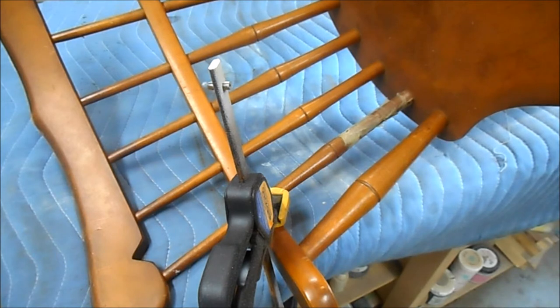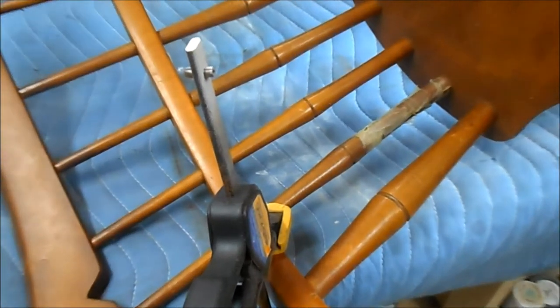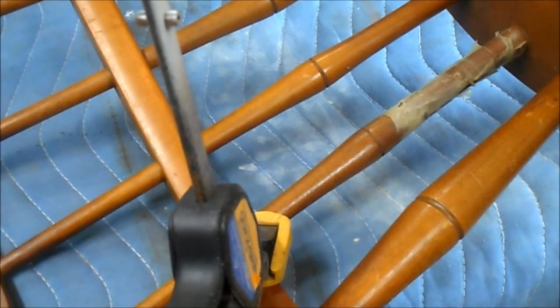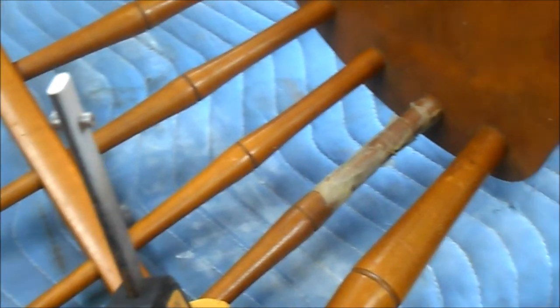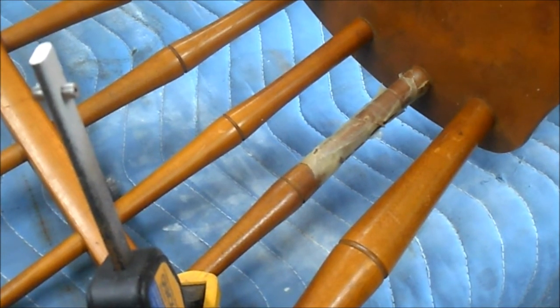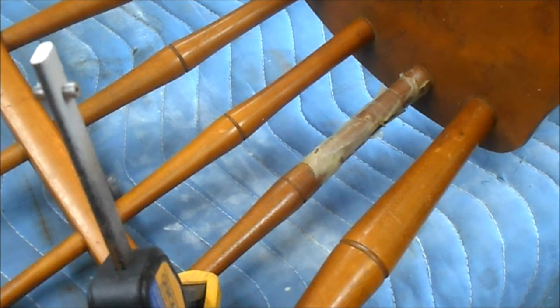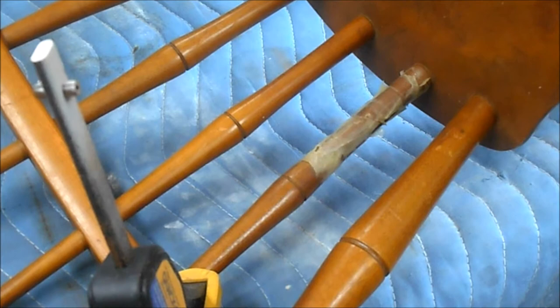Anytime we have scotch tape or any kind of adhesive tape like that, the solution is mineral spirits or naphtha to help get some of that stickiness off and break the bond. I will bring you back and we'll start to get this unwrapped and see what's waiting for us under the scotch tape.